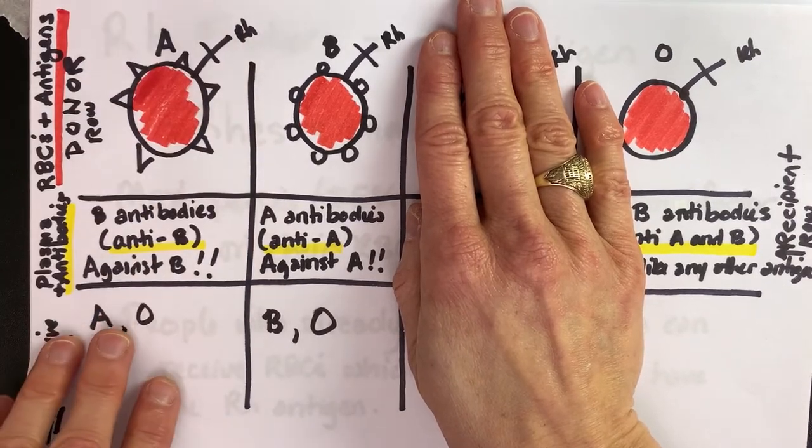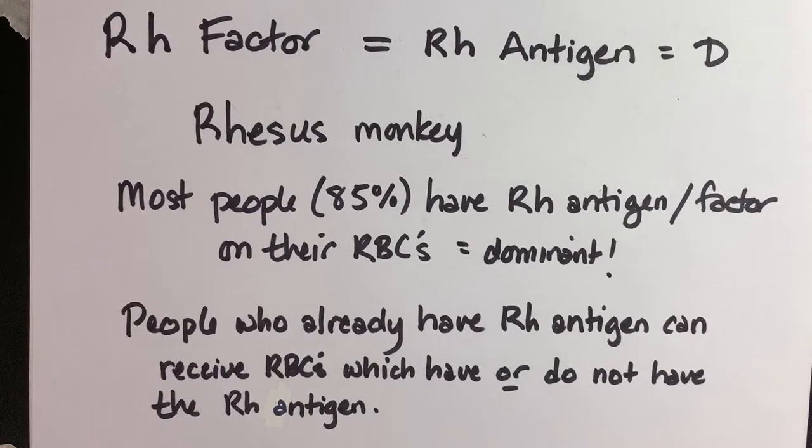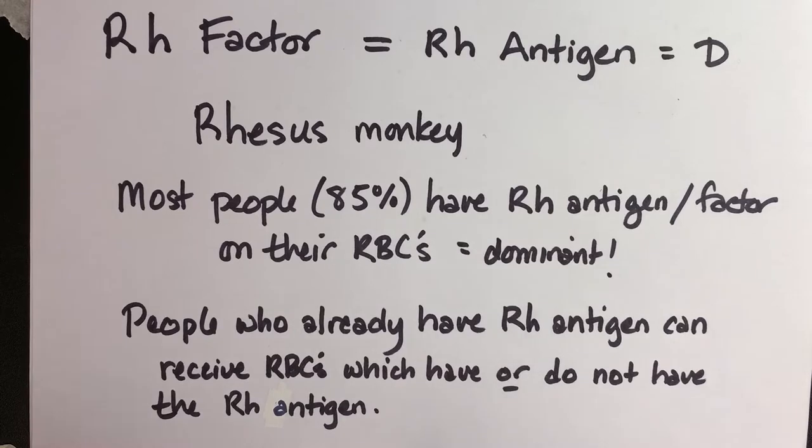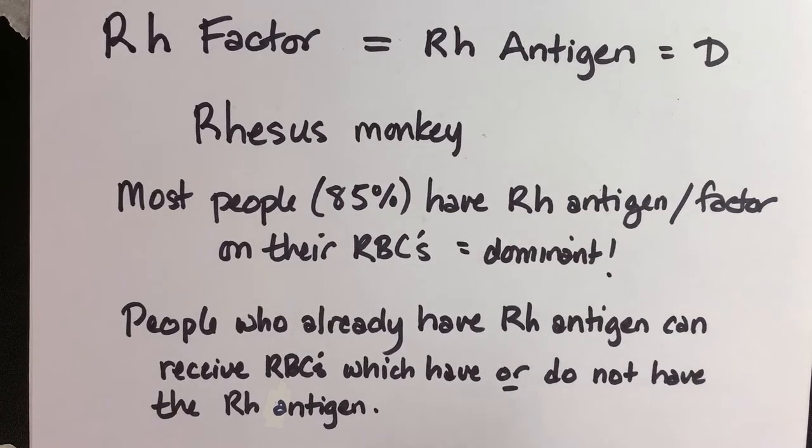Now let me show you the sentence that's right here. I wrote that people who already have the Rh antigens, if you already have that antigen on the cell membrane, and most people already do, 85% of people do, then they can receive other red blood cells that have that antigen that are Rh positive, and they can receive other red blood cells that don't have the antigen.